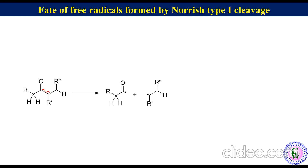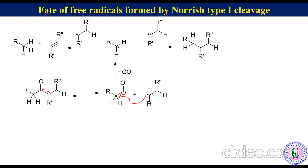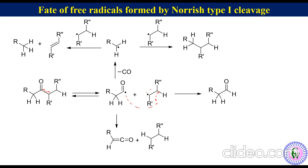These two radicals can combine with each other to produce starting material with racemization. The acyl radical can undergo decarbonylation — removal of carbon monoxide — to produce a second alkyl radical. The second alkyl radical and first alkyl radical can combine together to produce an alkane, or they can undergo disproportionation to produce an alkane and an alkene. The abstraction of an alpha proton from the carbonyl radical may form a ketene and alkene, and the abstraction of a beta proton from the alkyl fragment may form an aldehyde and an alkene.